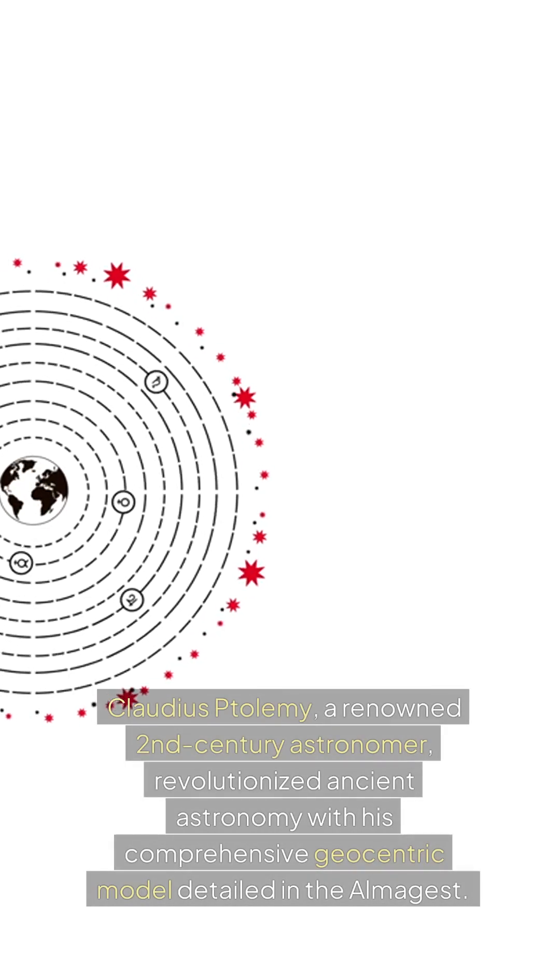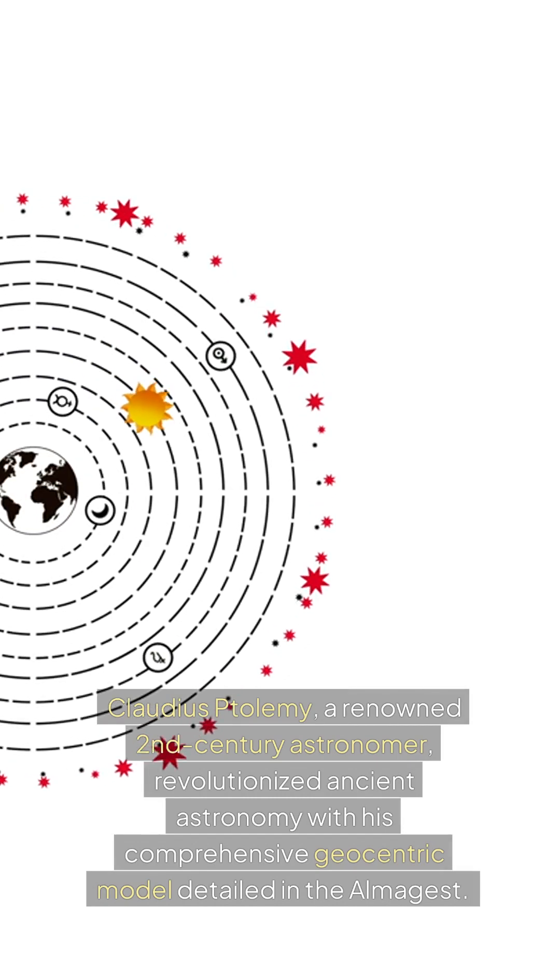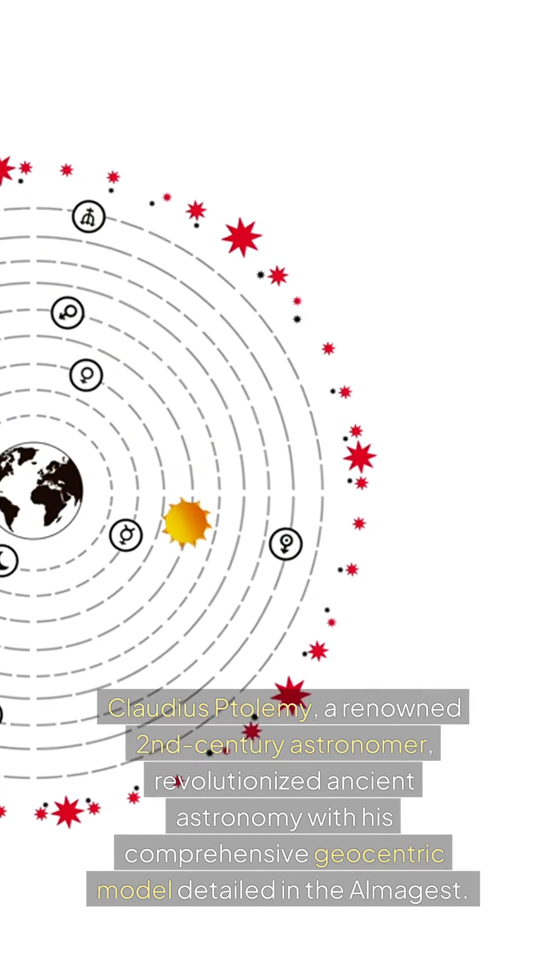Claudius Ptolemy, a renowned second-century astronomer, revolutionized ancient astronomy with his comprehensive geocentric model detailed in the Almagest.